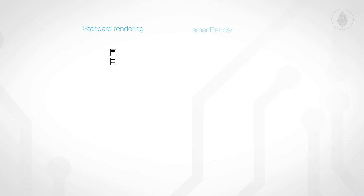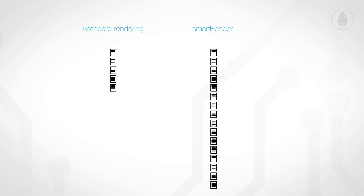By default, when you hit the Render button, Nuke will calculate one frame after the other. Smart Render, on the other hand, is able to use all your hardware resources and can render your image sequences using all cores, which will speed up your renderings dramatically. Smart Render includes some additional functionality to speed things up even more, which we will see in a second.